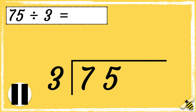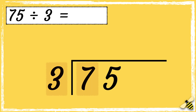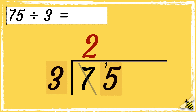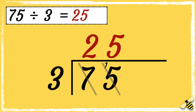So how many threes go into seven? Three goes into seven twice with one left over. So now we can work out how many threes go into 15. Three goes into 15 five times, so the answer is 25.